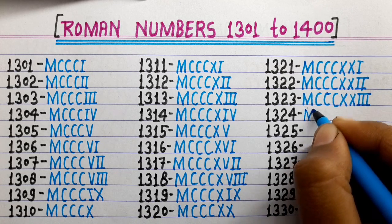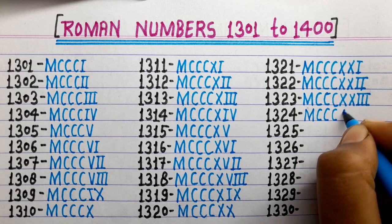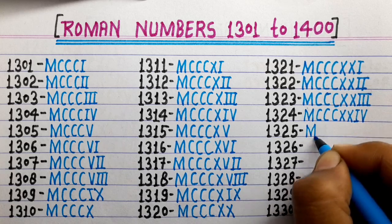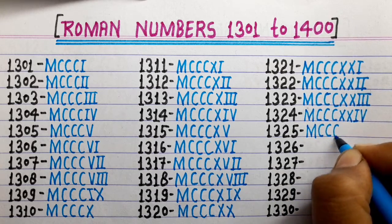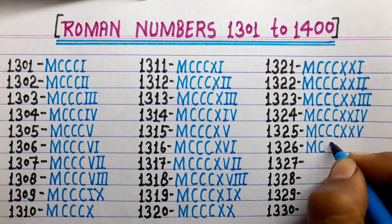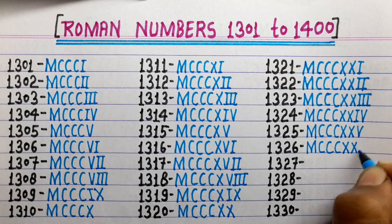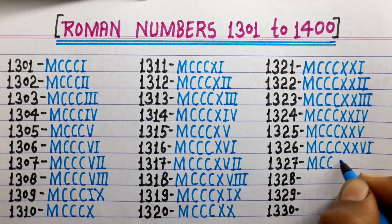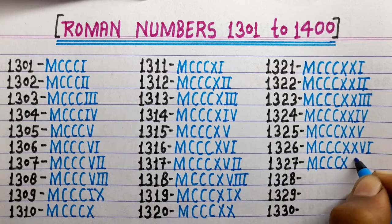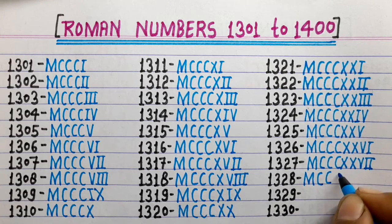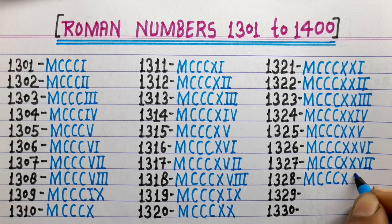1323 is MCCCXXIII. 1324 is MCCCXXIV. 1325 is MCCCXXV. 1326 is MCCCXXVI. 1327 is MCCCXXVII. 1328 is MCCCXXVIII.